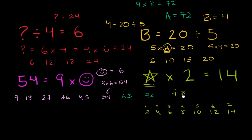So if I wrote 7 times 2 is equal to 14, this is absolutely true. So star must be equal to 7. Star is equal to 7.